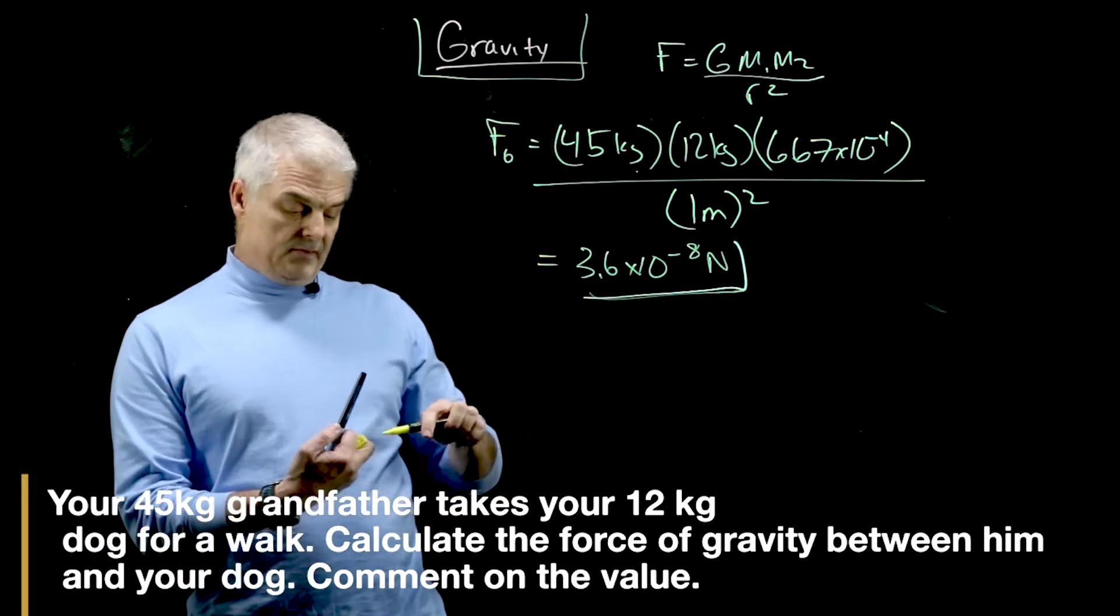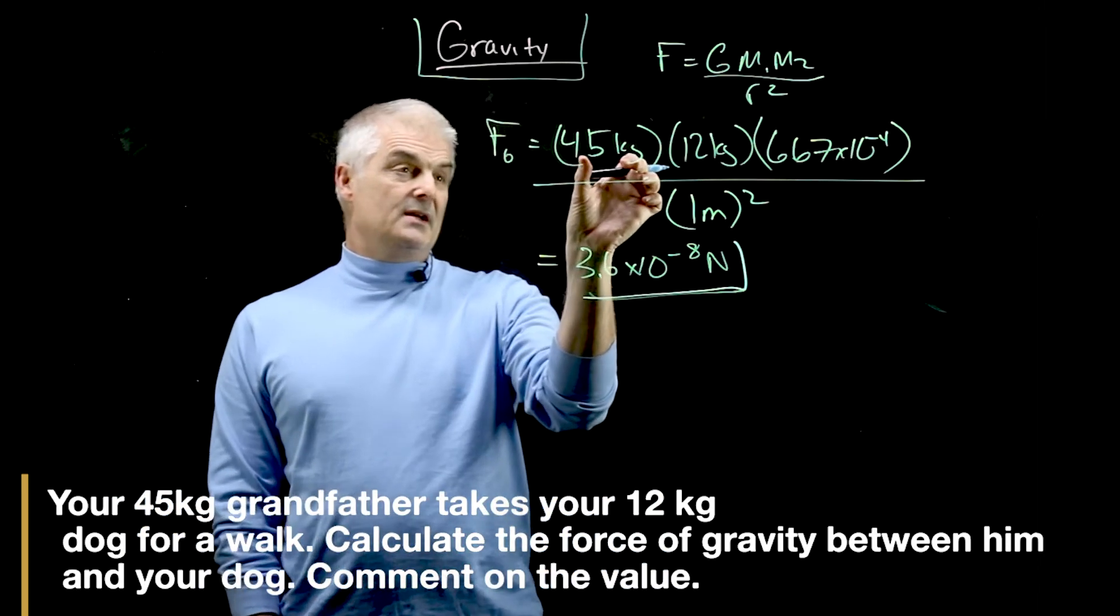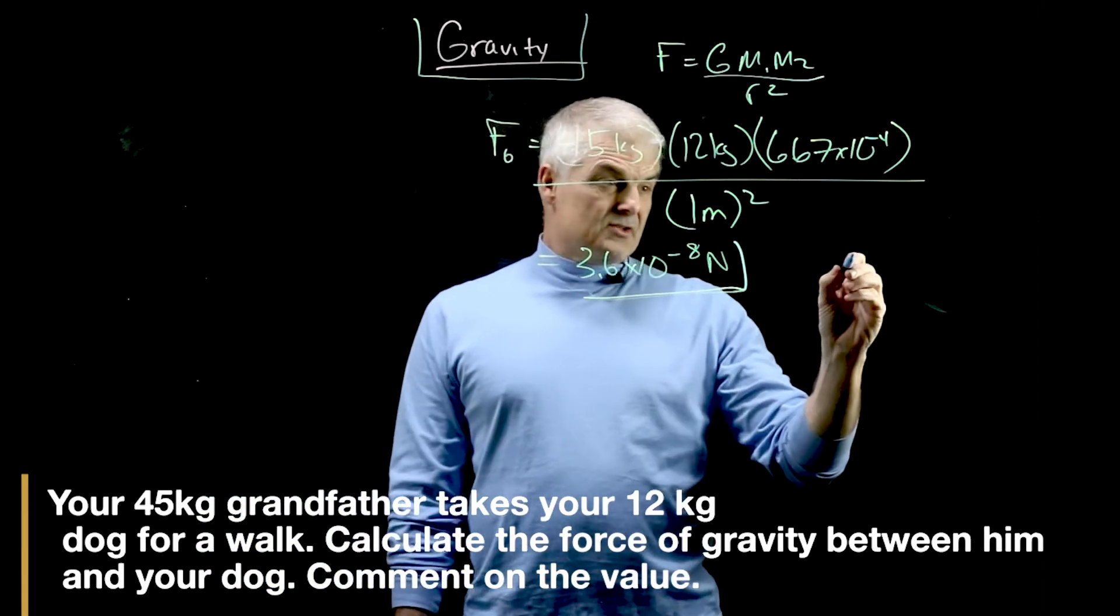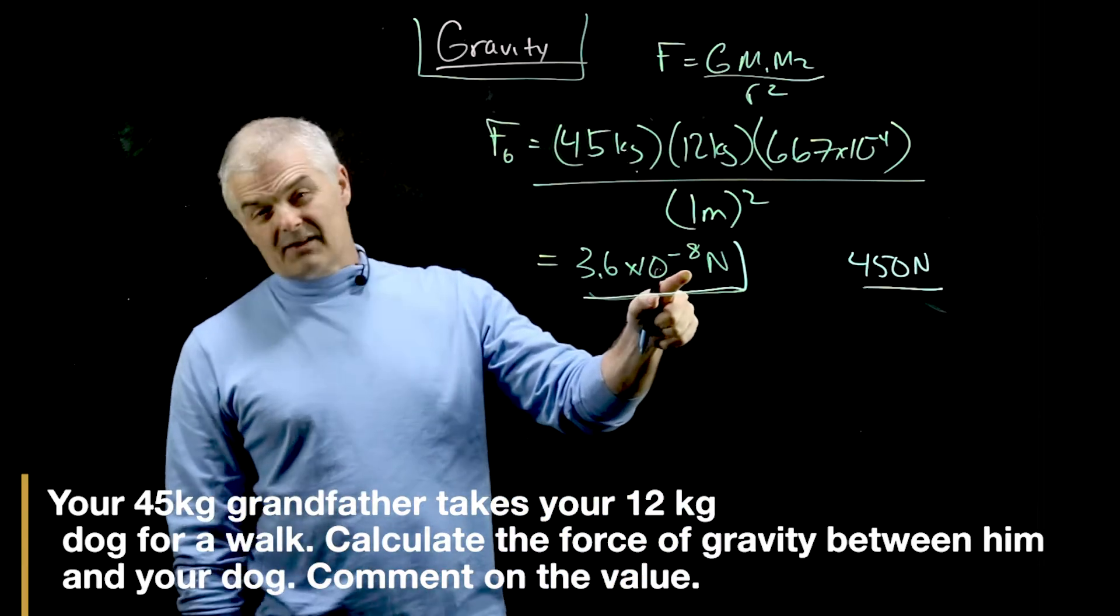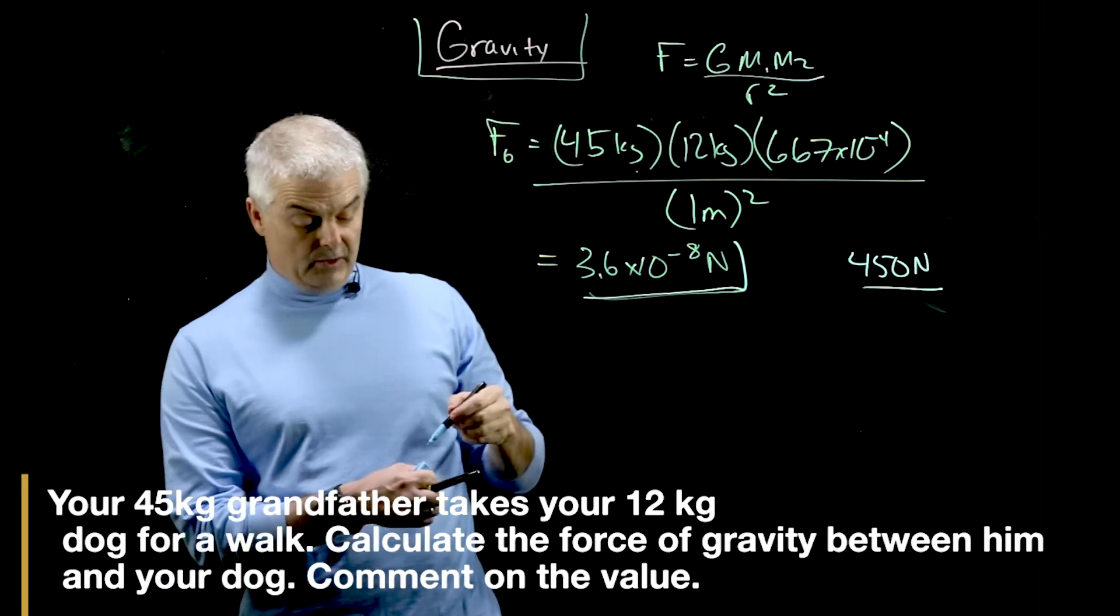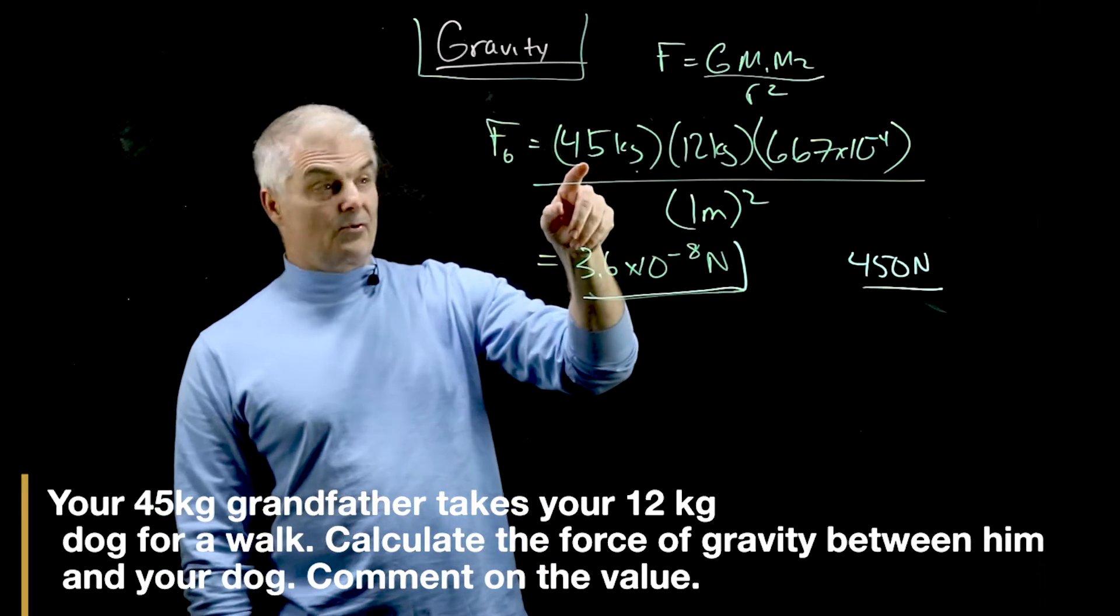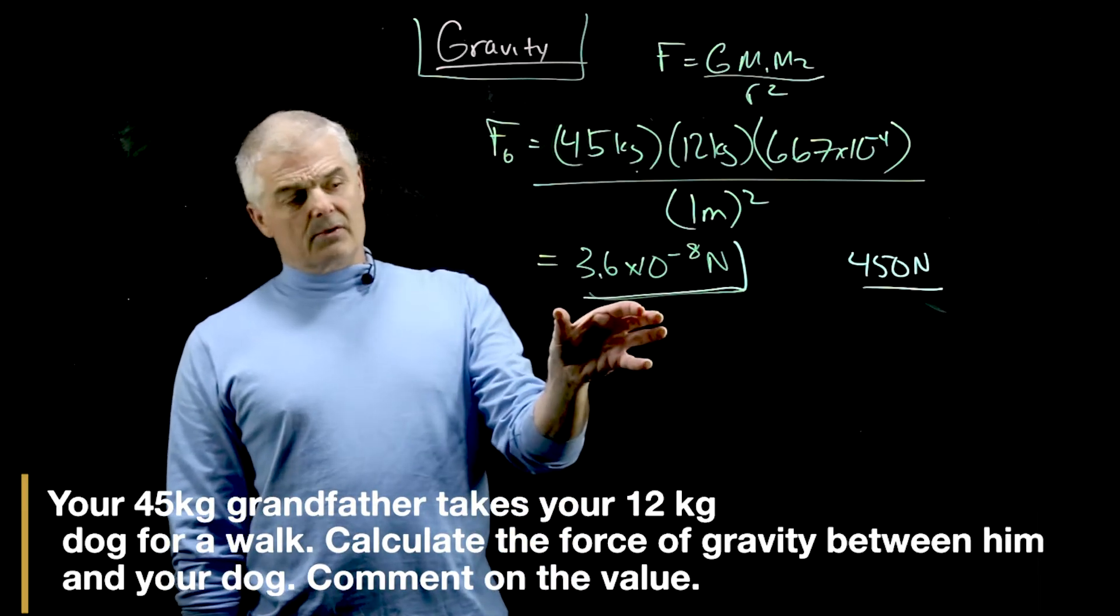We know F equals mA from previous videos. We would just take his mass, the mass of the guy, 45 times roughly 10. So his attraction to the earth is 450 newtons compared to 10 to the minus eighth newtons. That's why we can't tell any attractive forces between the dog and the man or between you and anything else, because you're so attracted to the earth. Because the mass of the earth is not 45 but some monster, monster number. So it's a very, very weak force.